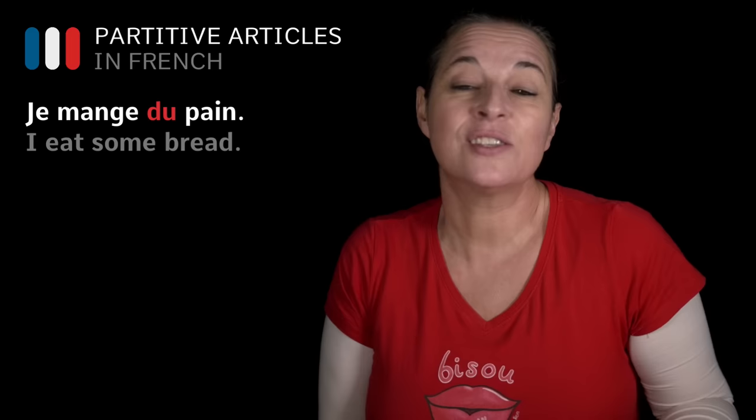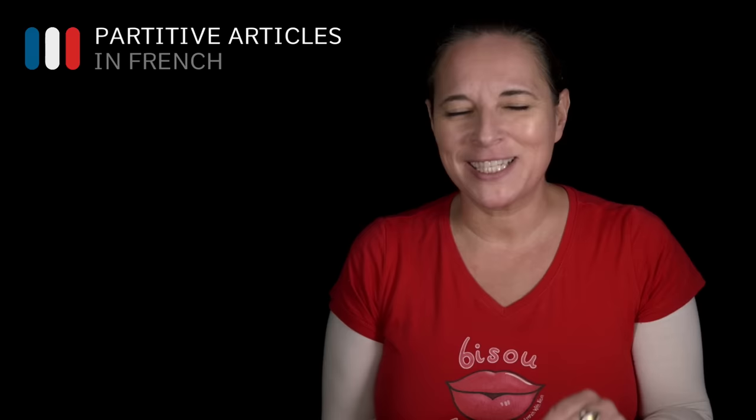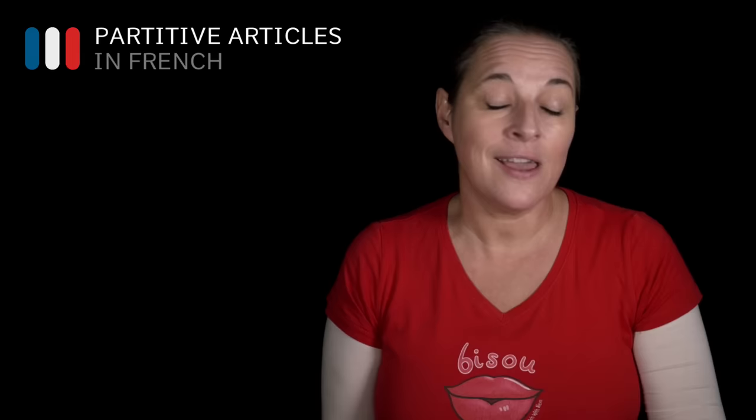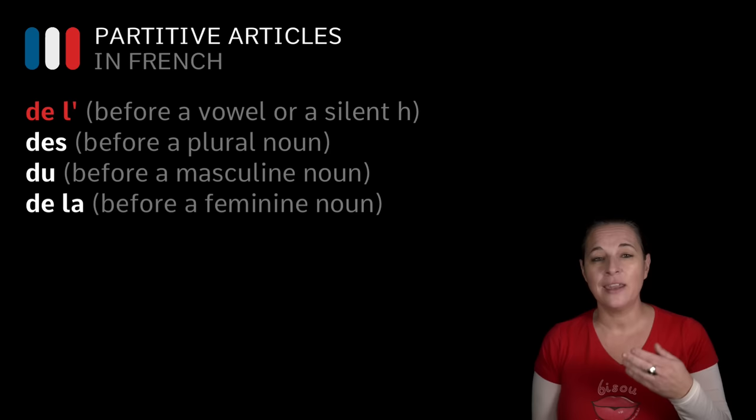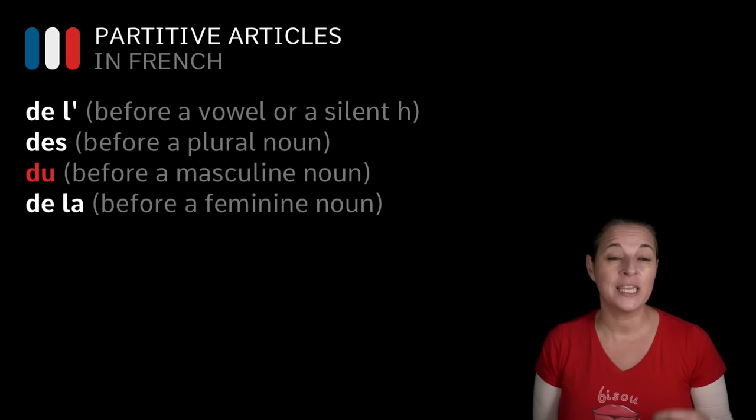It is often used for food, but not only. In French, the partitive article changes depending on the gender and number of the noun that follows. Every time you've got to think: what is the noun? Is the noun starting with a vowel or an H? In that case, it is going to be DE L' — with an apostrophe. If the noun is plural, it's going to be DES. If the noun is masculine, it's going to be DU. If the noun is feminine, it's going to be DE LA.